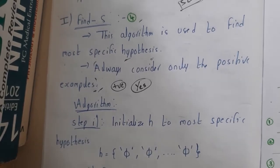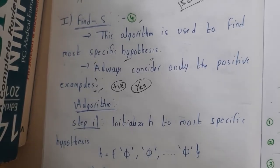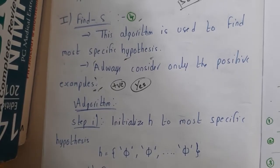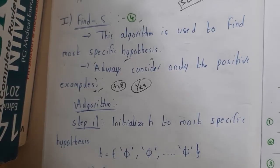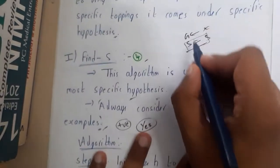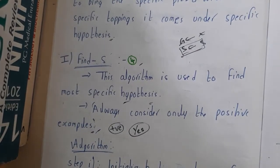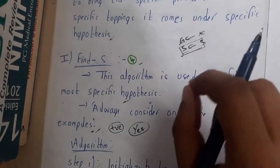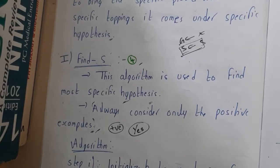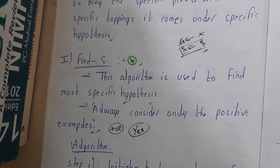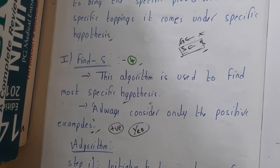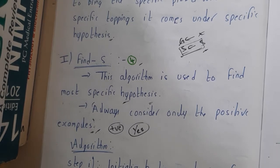Hello guys, we are back with our next lecture. In this lecture let us start with the Find-S algorithm. In the last lecture we discussed about general and specific hypothesis — general means you are not going to specify anything clearly, whereas in specific you will mention it specifically. If you haven't watched the previous lecture, please go back and watch it first.